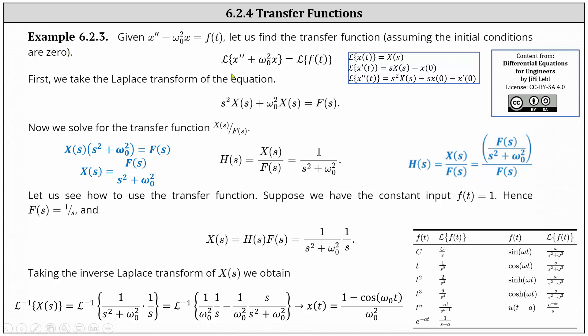For the first step, we take the Laplace transform of both sides of the equation. The Laplace transform of x double prime is equal to s squared times X(s) minus s times x(0) minus x prime of zero.